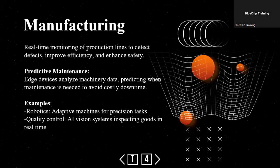Manufacturing relies heavily on Edge AI for automation and real-time monitoring. Edge devices inspect products as they are being made, using AI vision systems to detect defects immediately. Additionally, predictive maintenance enables machines to analyze their own data, predicting when they will need repair and avoiding unexpected breakdowns. These smart factories leverage edge computing to improve quality control, reduce costs, and enhance operational efficiency.